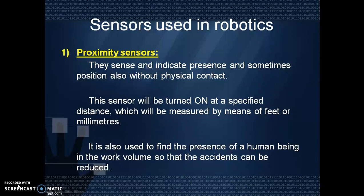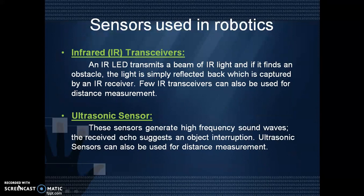First one is proximity sensors. They sense and indicate presence and sometimes position without physical contact. This sensor will be turned on at a specified distance measured in feet or millimeters. It is also used to find the presence of a human being in the work volume so that accidents can be reduced. Under proximity sensors, there are two types: infrared sensors and ultrasonic sensors. Infrared sensors use an IR LED that transmits a beam of IR light; if it finds an obstacle, the light is reflected back and captured by an IR receiver. Some IR transceivers can also be used for distance measurement.